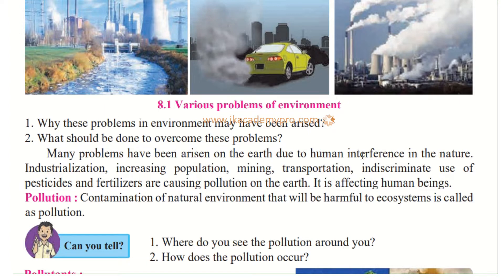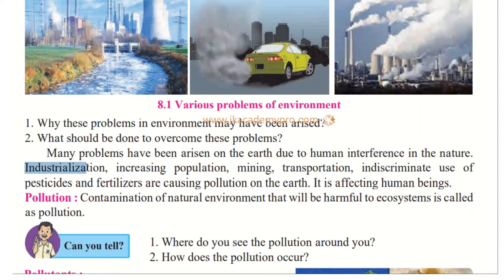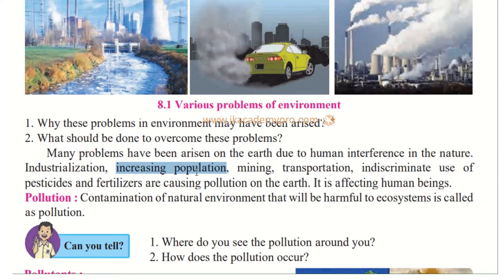Many problems have arisen on the earth due to human interference. Human beings have interfered — that means done something against nature. Industrialization, that is building large numbers of industries without even thinking about what the problems could be. Then there is the threat of increasing population. Our population is growing around the world, and because of that we are using large amounts of resources. We have to clear land to build buildings, we are consuming more water, and we have to grow more crops. So increasing population is also creating a large amount of pollution.